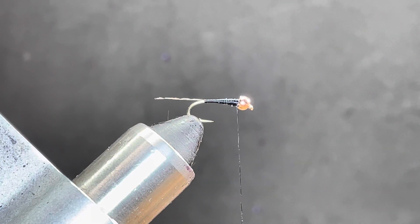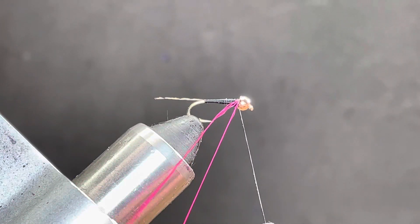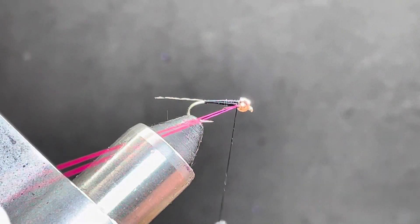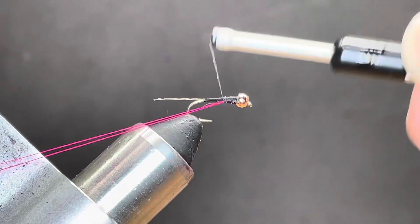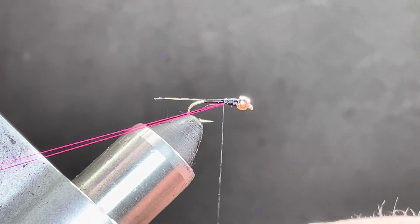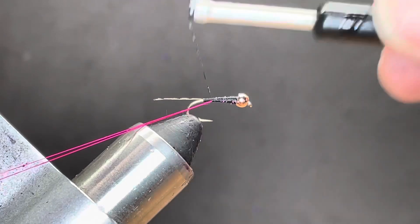For the rib, I'm just going to use some 70 denier fluorescent pink thread. I'm just going to wrap that underneath my thread, even the tips out, and take my time kind of coming back down just to keep that.